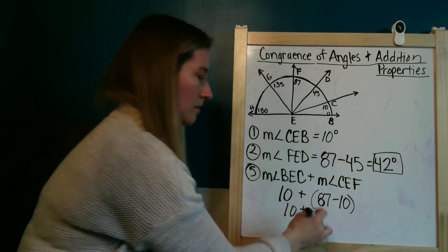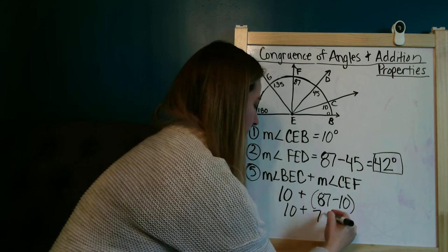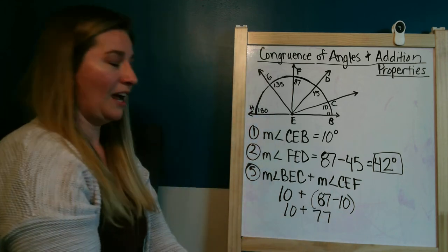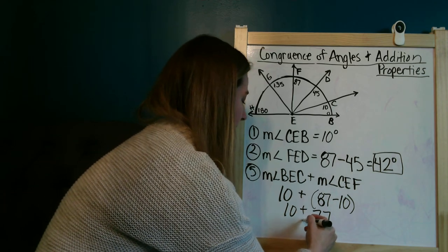Now I have to do this subtraction first. So 87 minus 10 is 77. And then I'm going to go ahead and add in that 10 degrees right there.